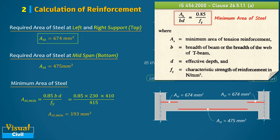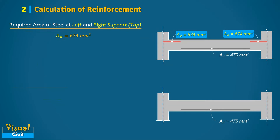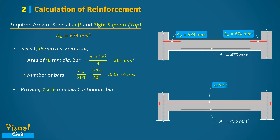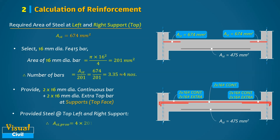Now let us determine the number of bars to be provided at the top of the beam at the support. We select 16 mm diameter bars. Since we need approximately four bars, we will provide two continuous bars and an additional two bars as extra top steel. This results in a total steel area of 804 mm².